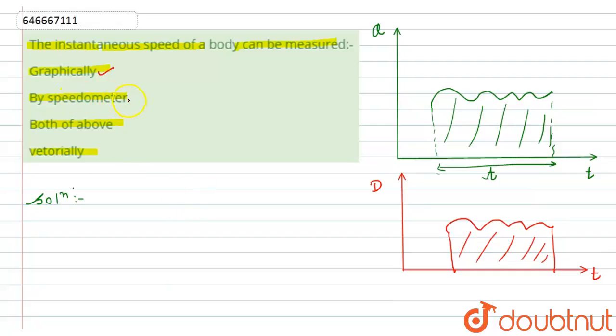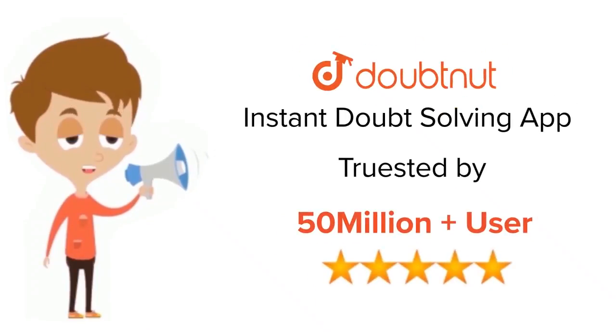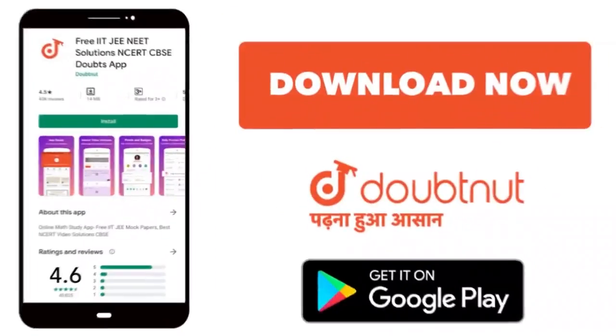So this second option is also true. That's why, according to the option 'both of above,' option C will become the correct answer for this question. So this is the required solution. Thank you. For class 6-12, IIT-JEE and NEET level, trusted by more than 5 crore students, download Doubtnet app today.